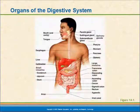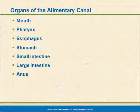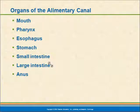Looking at the major organs of the digestive system, we're going to go through these one at a time. The alimentary canal includes the mouth, the pharynx, the esophagus, the stomach, the small intestine, the large intestine, the rectum, and then the anus. This is essentially the flow of food through the system.